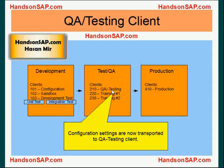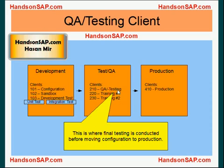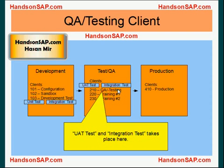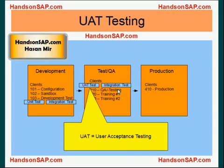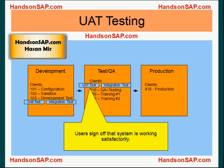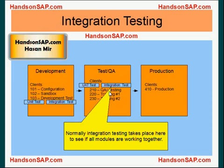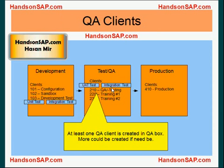Now it's time to transport your configuration settings to the QA testing client — that's the number one client in your test box. This is where the final testing is conducted before your system goes to production. UAT testing takes place here as well as integration tests. UAT stands for user acceptance testing — users basically sign off saying they're happy with the system. If they're not happy, you go back to the configuration client, make more configuration changes, and transport them back to QA, repeating the testing until you're happy. Integration testing normally takes place at the QA box, but optionally you can also do integration testing in the dev box or both.